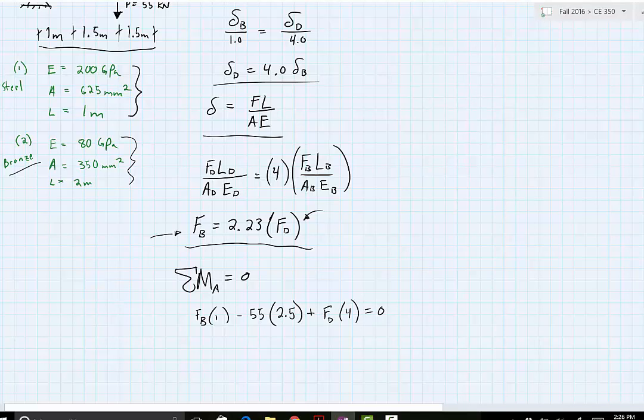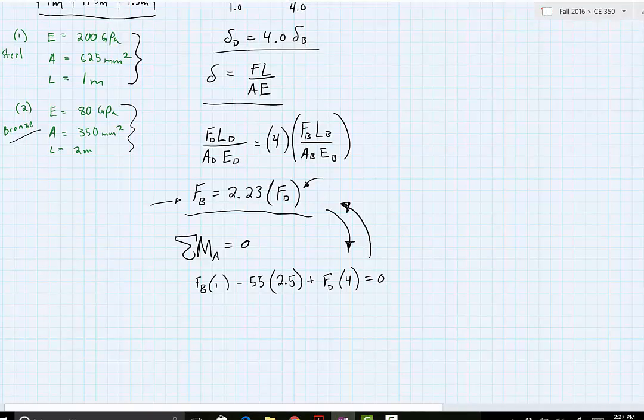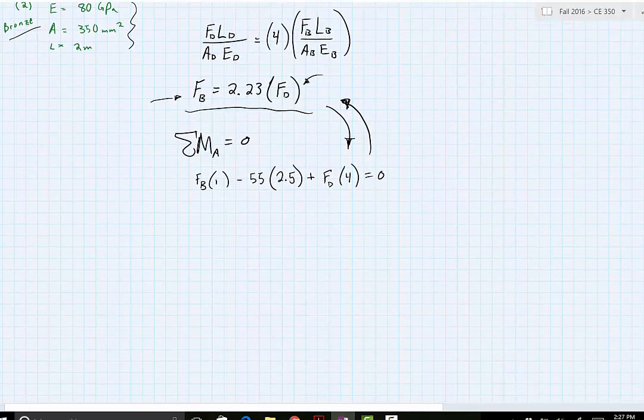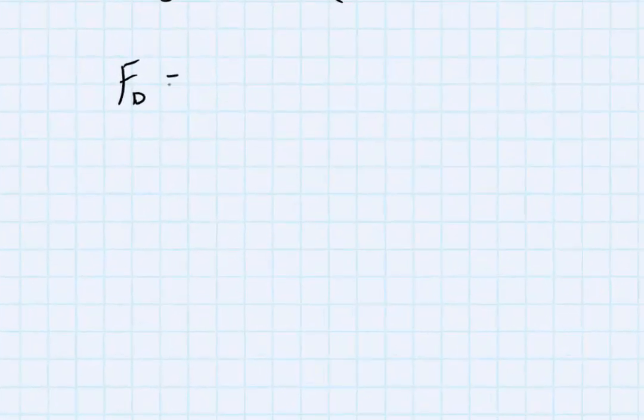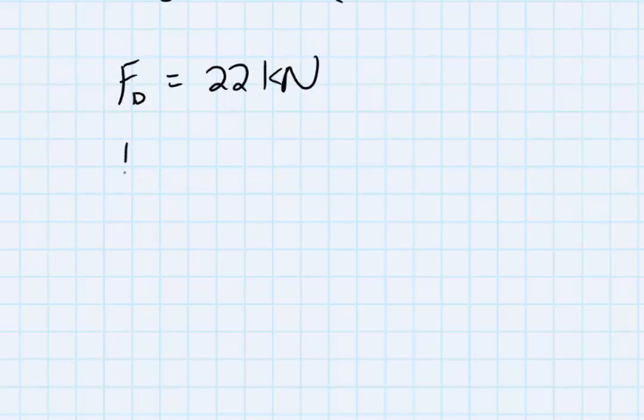So now between these two equations, we have two equations and two unknowns. And using your algebra skills, again, which I won't do here, you should be able to solve those fairly easily and get a force acting at D to equal 22 kilonewtons, and the force acting at B to equal 49.1 kilonewtons.